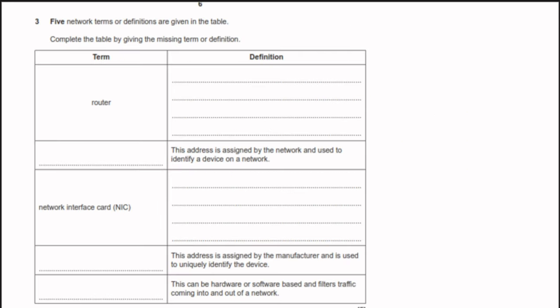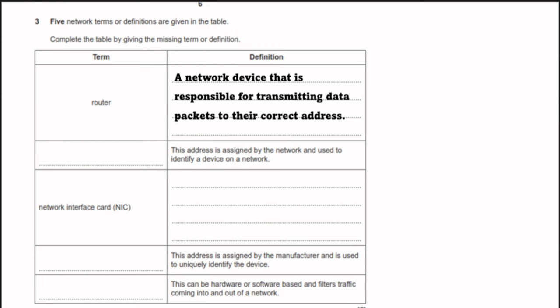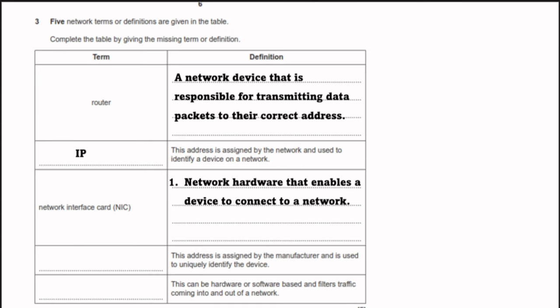Question 3: complete the table of network terms. A router is a network device responsible for transmitting data packets to their correct destination. The address assigned by the network and used to identify a device is the IP address. NIC (network interface card) is the network hardware that enables a device to connect to a network. An address assigned by the manufacturer used to uniquely identify a device is the MAC (Media Access Control) address. A hardware or software component that filters traffic into and out of a network is a firewall.